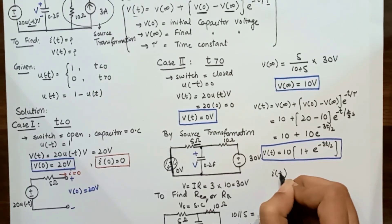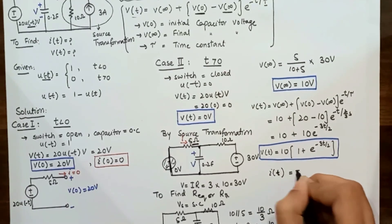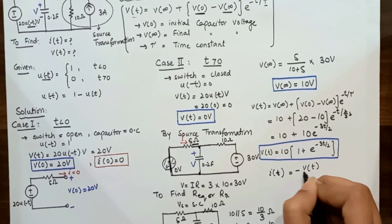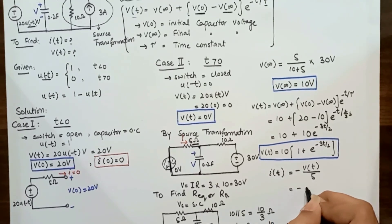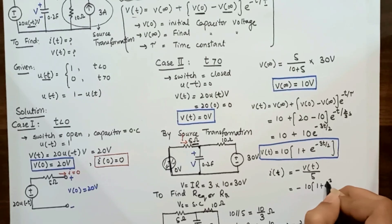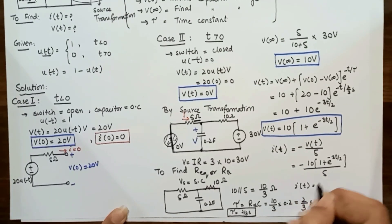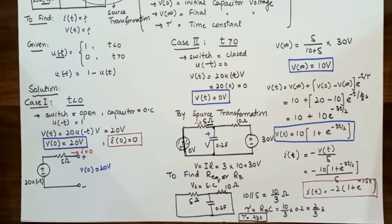Now we find the current i. The given direction of current is opposite to the direction flowing from the positive terminal of the 30 V source, so there will be a negative sign. The current through the 5 Ω resistor is i = -V/R = -[10(1 + e^(-3t/2))] / 5 = -2(1 + e^(-1.5t)) A. This completes finding the step response of the RC circuit — both voltage and current.